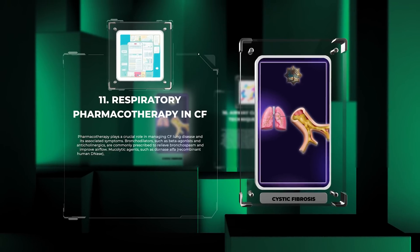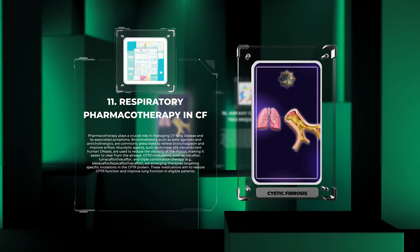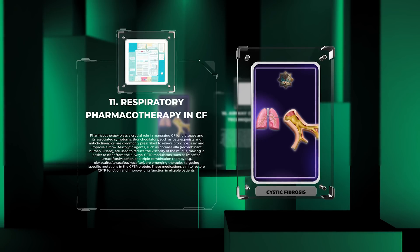Pharmacotherapy plays a crucial role in managing CF lung disease. Bronchodilators, such as beta-agonists and anticholinergics, are commonly prescribed to relieve bronchospasm and improve airflow. Mucolytic agents, such as Dornase alfa (recombinant human DNase), are used to reduce the viscosity of mucus, making it easier to clear from the airways. CFTR modulators, such as Ivacaftor, Lumacaftor/Ivacaftor, and triple combination therapy (Elexacaftor/Tezacaftor/Ivacaftor), are emerging therapies targeting specific mutations in the CFTR protein, aiming to restore CFTR function and improve lung function in eligible patients.